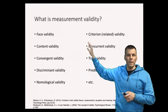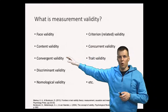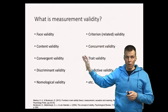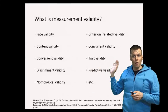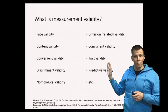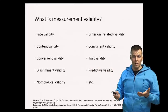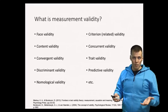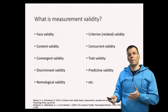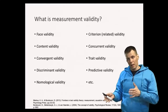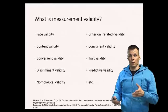You have face validity, content validity, convergent validity, discriminant validity, nomological validity, and so on. There are so many different terms. Do you have to understand all of these? Are these facets of validity that all have to apply? Are they different definitions? Are they contradictory?